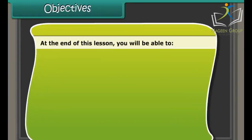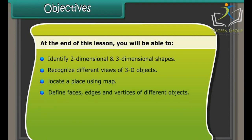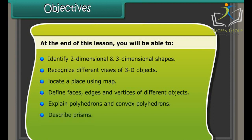At the end of this lesson, you'll be able to identify two-dimensional and three-dimensional shapes, recognize different views of 3D objects, locate a place using a map, define faces, edges, and vertices of different objects, explain polyhedrons and convex polyhedrons, describe prisms, discuss pyramids, and apply Euler's formula.